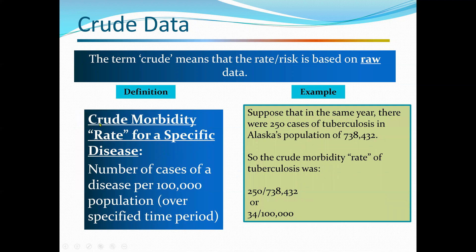Next, the crude morbidity rate for a specific disease is the number of cases of a disease per 100,000 population over a specified time period. For example, in 2015, there were 250 cases of TB in Alaska's population of 738,432. The crude morbidity rate for TB is 250 divided by 738,432, which reduces to 34 per 100,000 population.